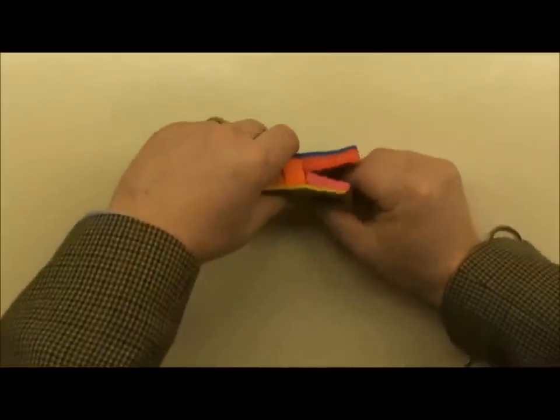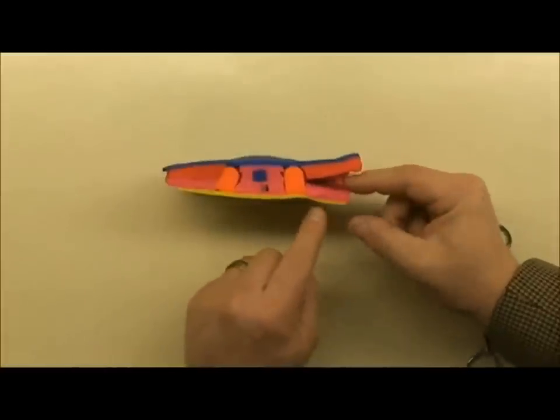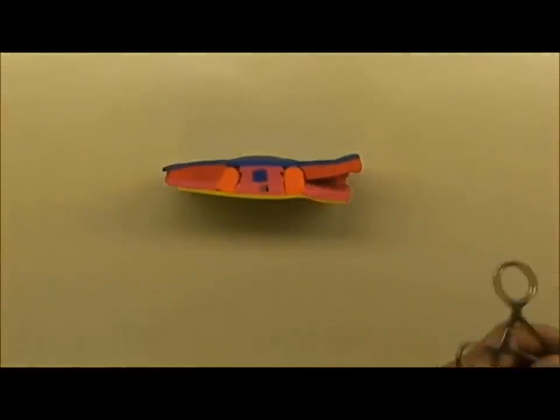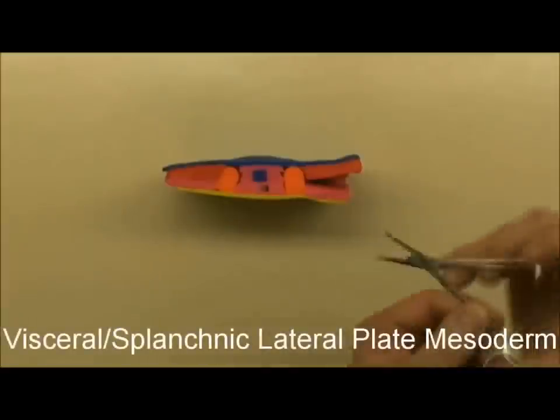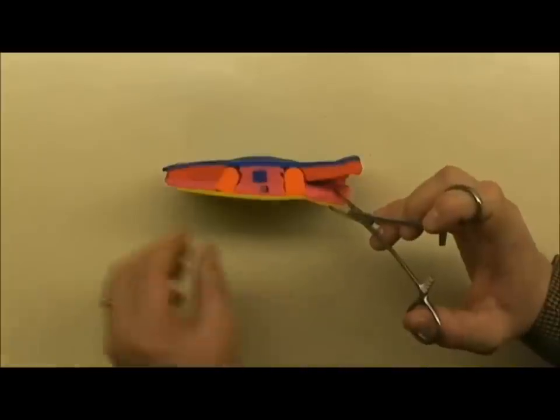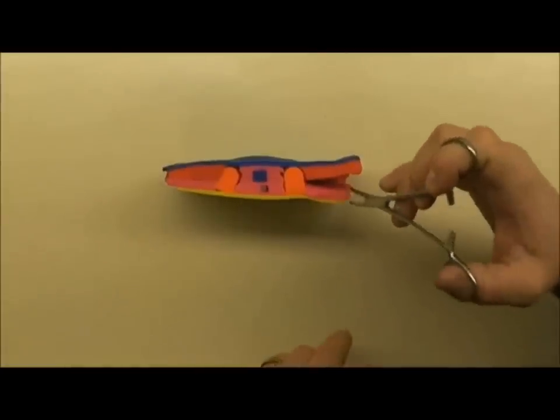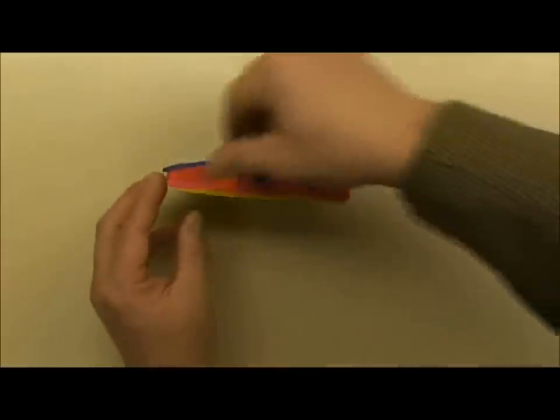The portion that's going to be in contact with this yellow section down here, the endoderm, this whole assemblage is now referred to as the visceral or splanchnic lateral plate mesoderm. And what it's going to do is fold on itself and create the gut tube and all the connective tissue and smooth muscle that surrounds the gut tube.